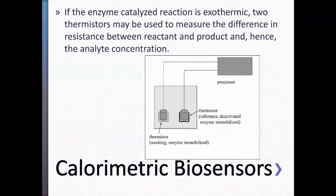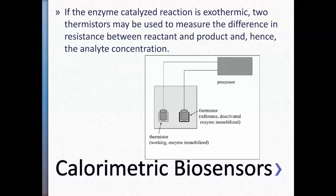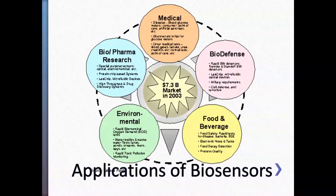Then we have calorimetric biosensors. Calorimetry is basically about heat — this type senses heat. If you have a certain exothermic reaction that releases heat, you use thermistors to measure the difference in resistance between the reactant and the product. The change in temperature from the heat released is sensed by your calorimetric biosensor.